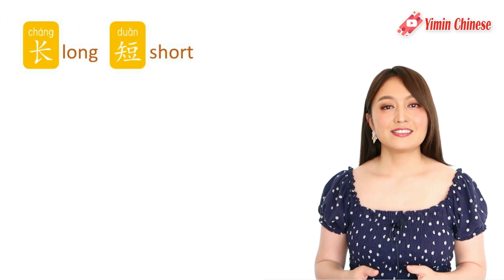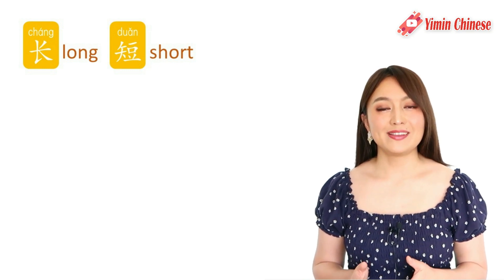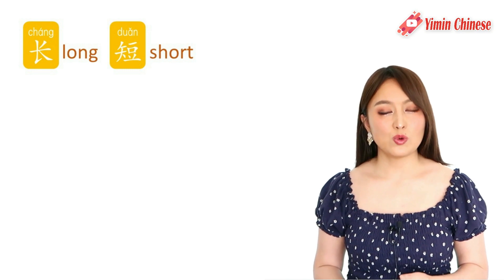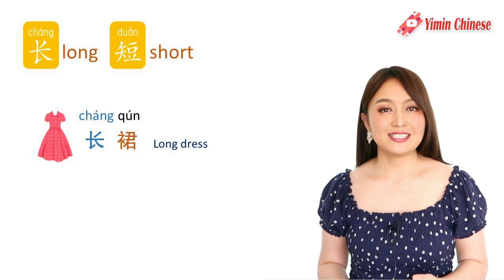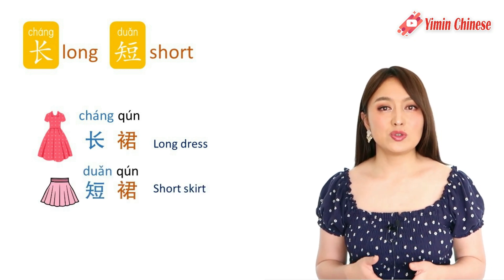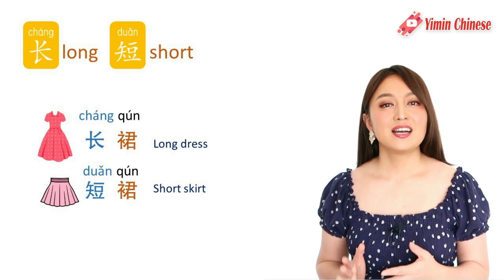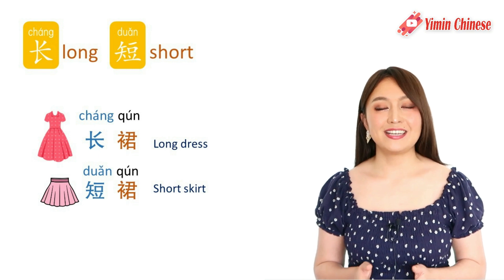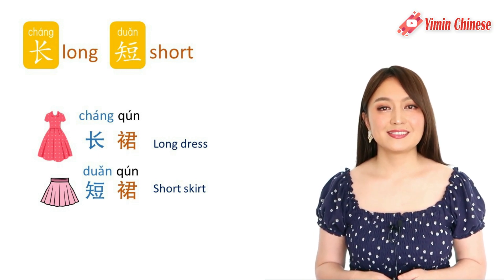And we have 长 (long) and 短 (short). For example, 长裙 is a dress and 短裙 is a skirt. Let's read together: 长裙，短裙.